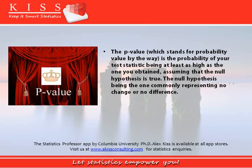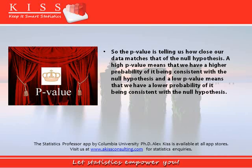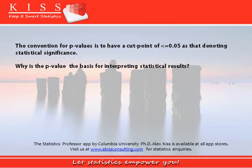When you run tests in practice, you have a certain statistic of interest — your test statistic. The p-value is the probability of your test statistic being at least as high as the one you obtained, assuming that the null hypothesis is true. The null hypothesis commonly represents no change or no difference. So the p-value is telling us how closely our data matches that of the null hypothesis. A high p-value means a higher probability of it being consistent with the null hypothesis, whereas a low p-value means a lower probability of it being consistent with the null hypothesis. The standard convention is a cut point of less than or equal to 0.05 as denoting statistical significance.